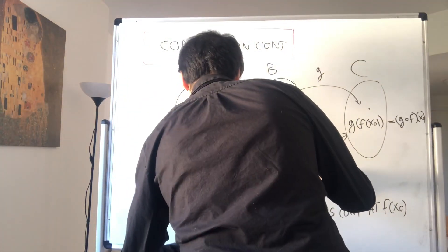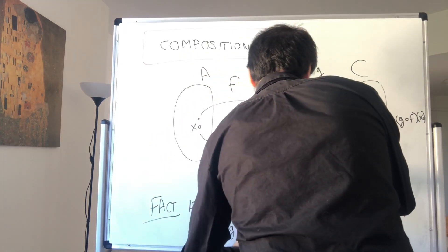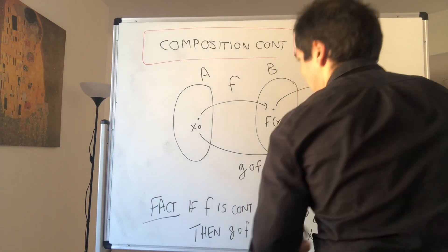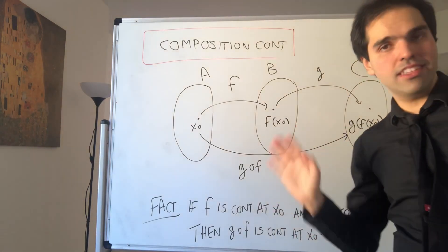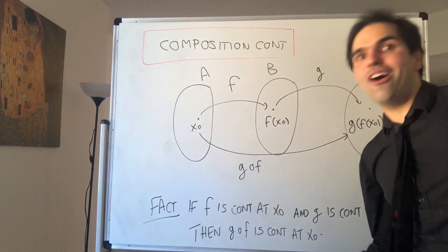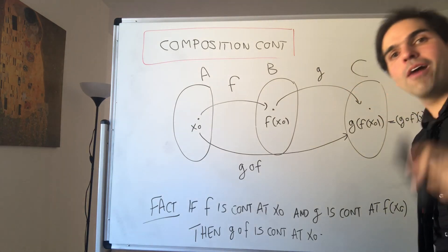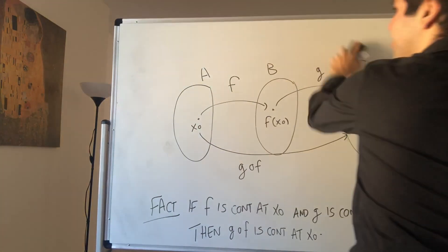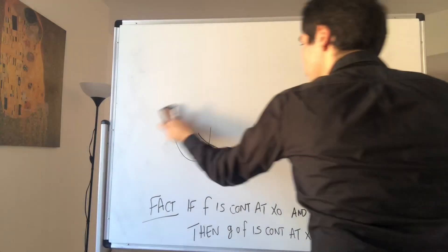So the fact we want to show is: if f is continuous at x naught and g is continuous at the point f of x naught, then g composed with f is continuous at the initial point x naught. I will prove this two ways — with sequences and with epsilon and deltas — but there is an even more awesome topological way, which I'll probably do in another video.